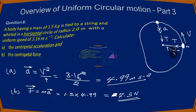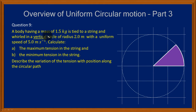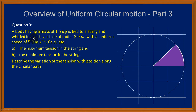Let's look at question 9. We are told that a body having a mass of 1.5 kg is tied to a string and whirled in a vertical circle of radius 2 meters with a uniform speed of 5 meters per second. The speed of the object along this vertical circle is uniform, but remember the circle is vertical. We want to calculate the maximum tension in the string, the minimum tension in the string, and describe the variation of the tension with position along the circular path.